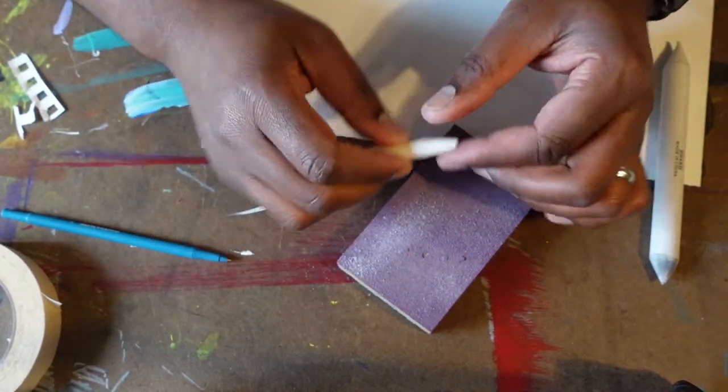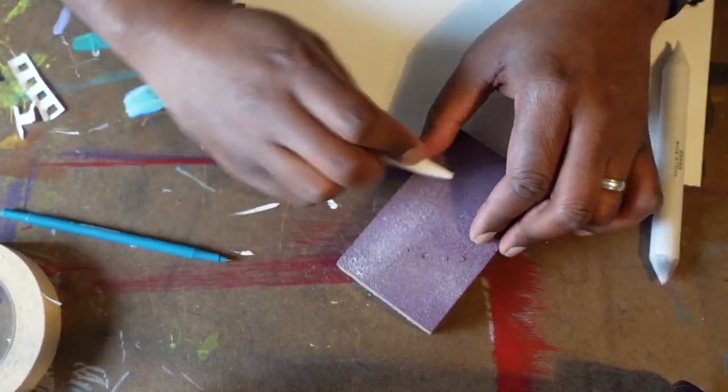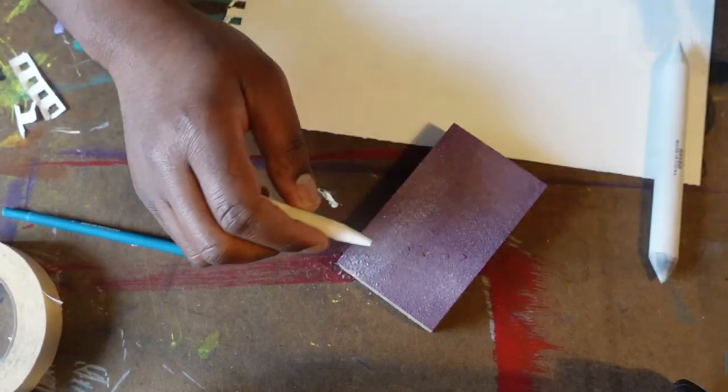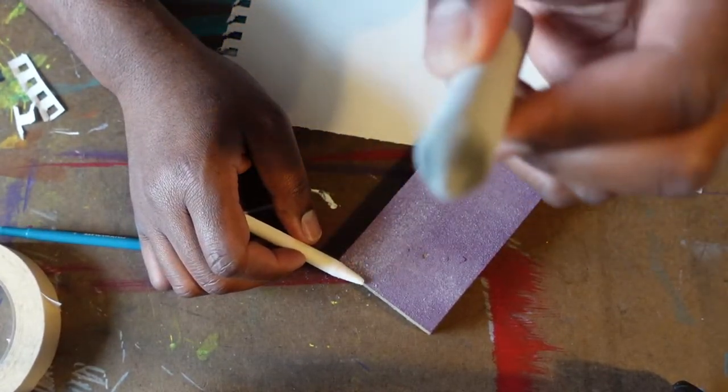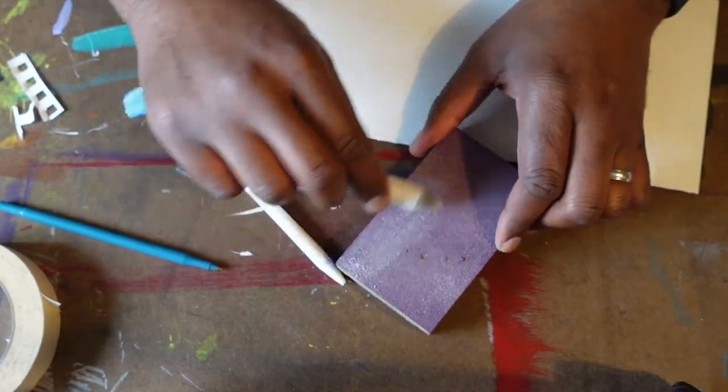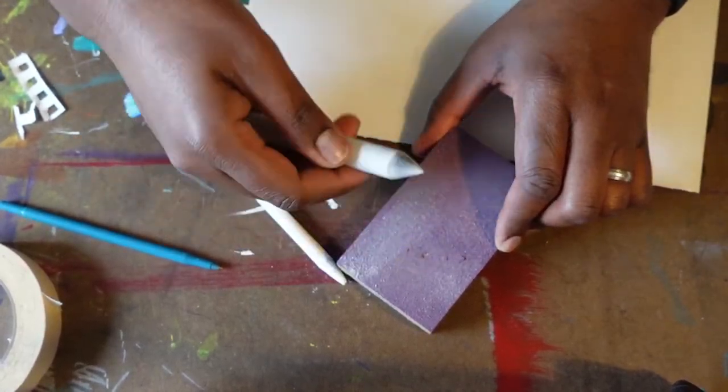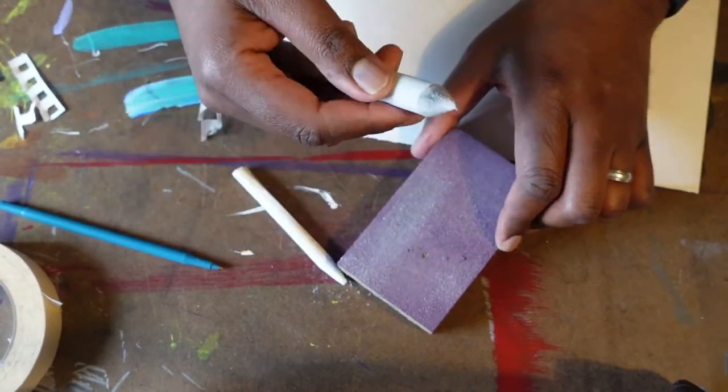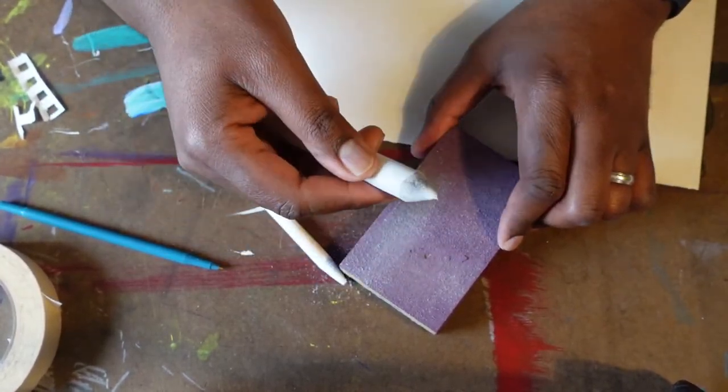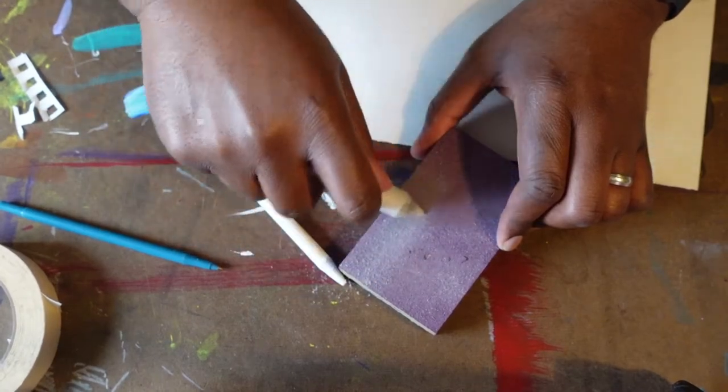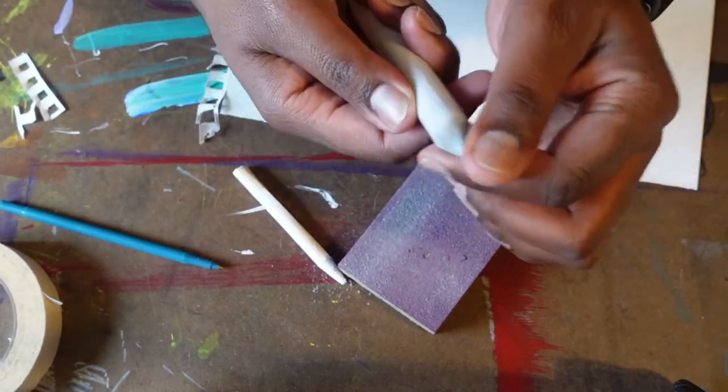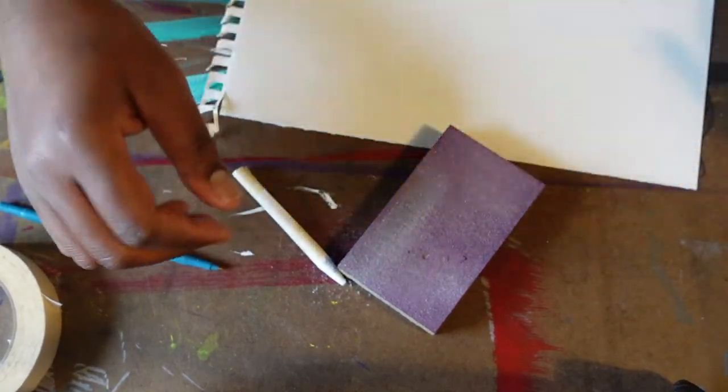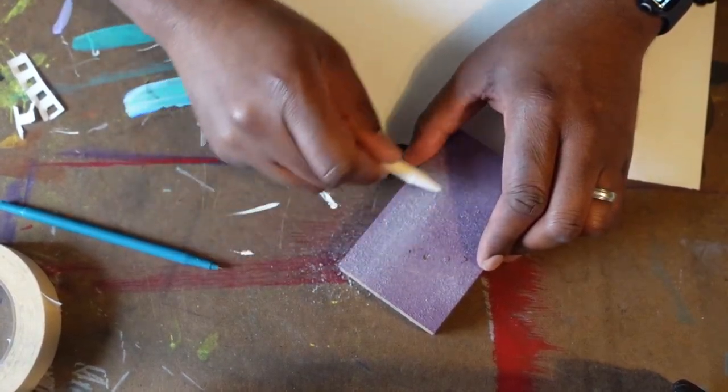This is also another way we clean our blending stumps. For instance, this one is a little bit dirty right here. What I would just do is come around just like this and begin to clean it. Notice it's starting to clean off. It's the same thing with this.